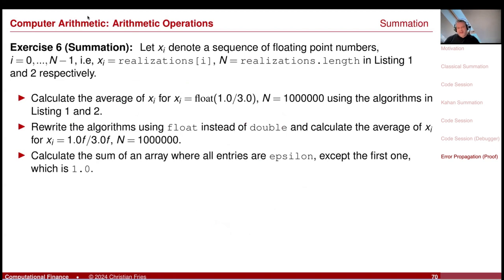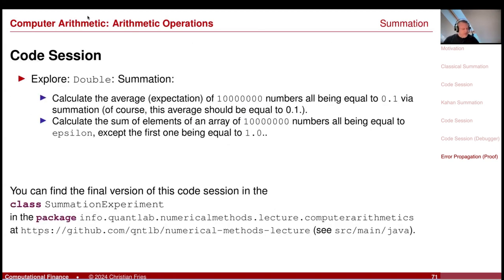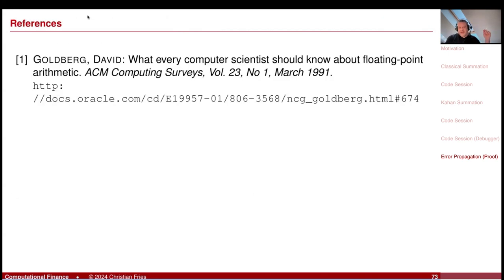This is our exercise and coding session — you can find this written out in the class in our repository. That was it for computer arithmetics. Here is the reference where you also find the proof for the Kahan summation algorithm. I really recommend this reference: 'What Every Computer Scientist Should Know About Floating Point Arithmetic.' There are a lot of nice things described in this article. That was it for today. Thanks.